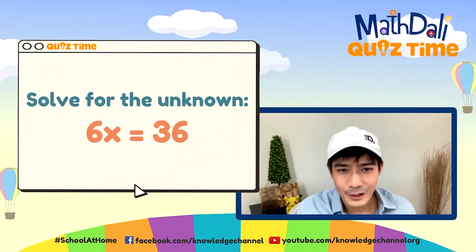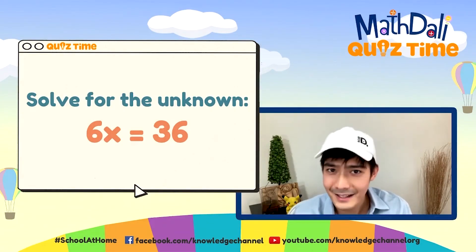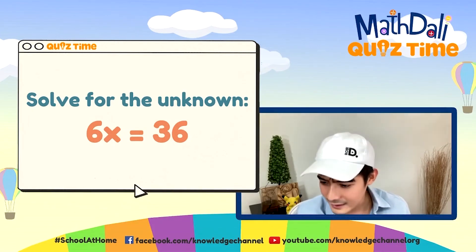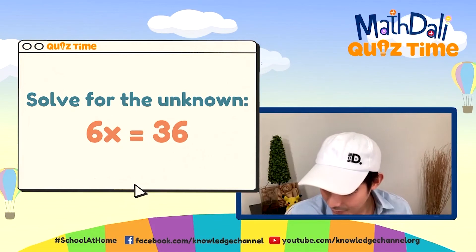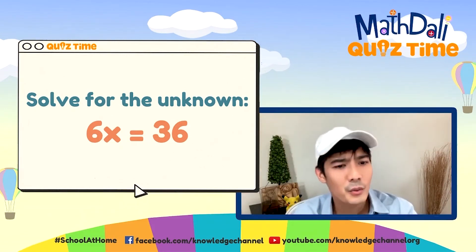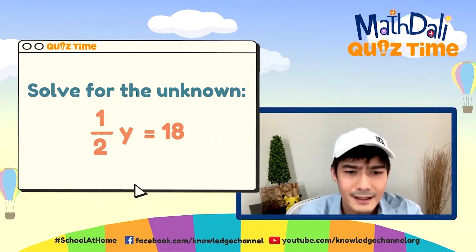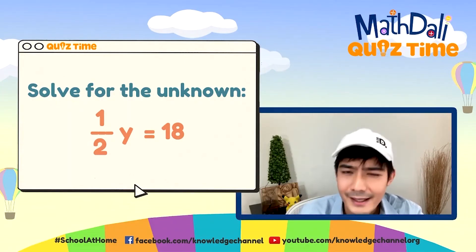Okay, so ang ating value for this one — ang value ng x for this is 6. Sa lahat ng mga nakakuha ng 6 — good job! Now let's head on to question number 2. Let's solve for the unknown: 1 over 2 Y is equal to 18.